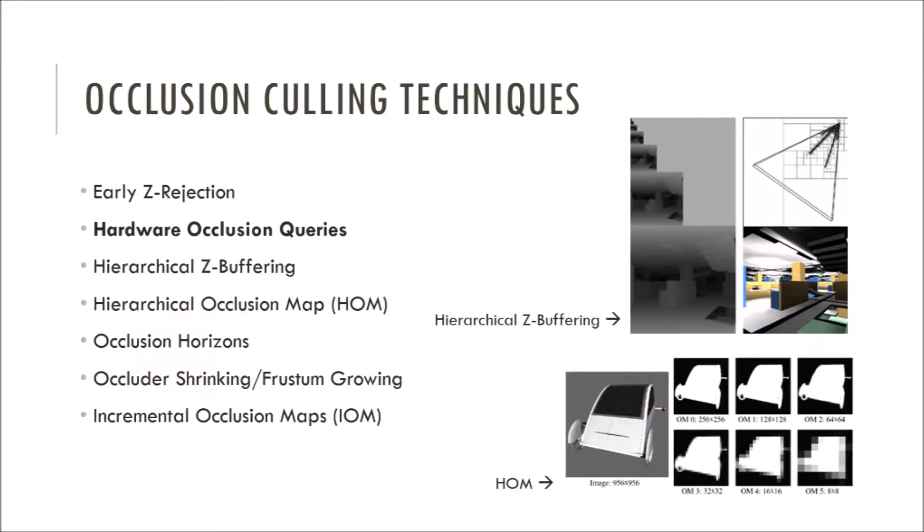So here's a list of occlusion culling techniques out there. There's early Z-rejection, which uses the depth and stencil buffers. There's hardware occlusion queries that we'll look at in just a bit. I won't be going into much detail on the others, but I thought I'd include them here if you want to check them out later. Hardware occlusion queries are a more GPU-friendly approach, and is probably the most popular after simple yet costly early Z-rejection. So we're just going to focus on them for the rest of the presentation.